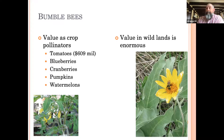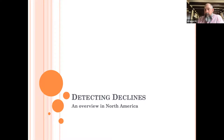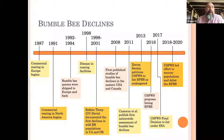Bumblebees are important, but they are declining — and you might wonder how rusty patch bumblebee got to the point of being an endangered species. In 1987, bumblebees first began to be commercially raised in Europe. While there were some early studies of people catching bumblebee queens in the late 1800s and early 1900s, it wasn't really commercialized. By 1991 we had commercial rearing taking place in North America, mostly aimed at tomato pollination.